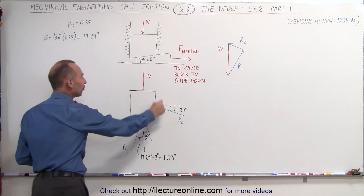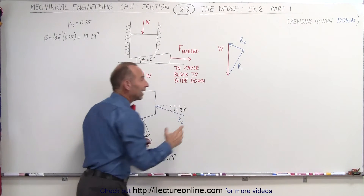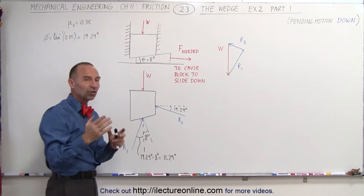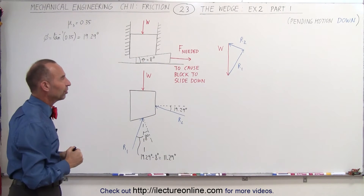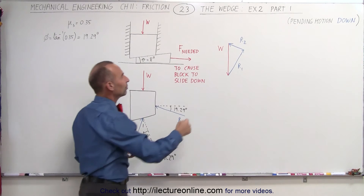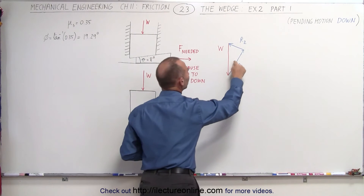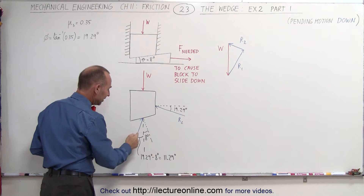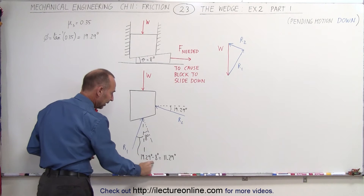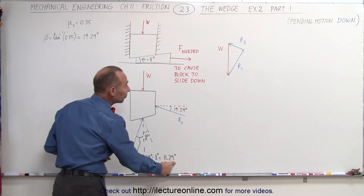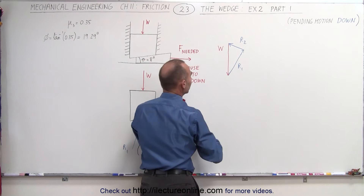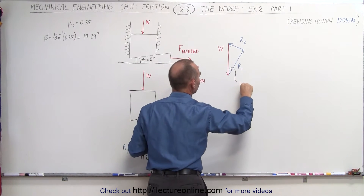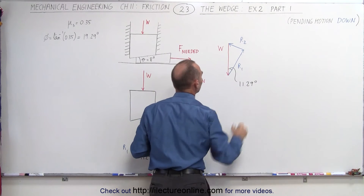We then take these three forces and sum them together. Since there is only pending motion and no actual motion, the sum of those forces must equal zero. Now we need to find the angles between those forces. Looking at R1, we can see that the angle relative to the vertical is 11.29 degrees, which means that same angle appears here as well.